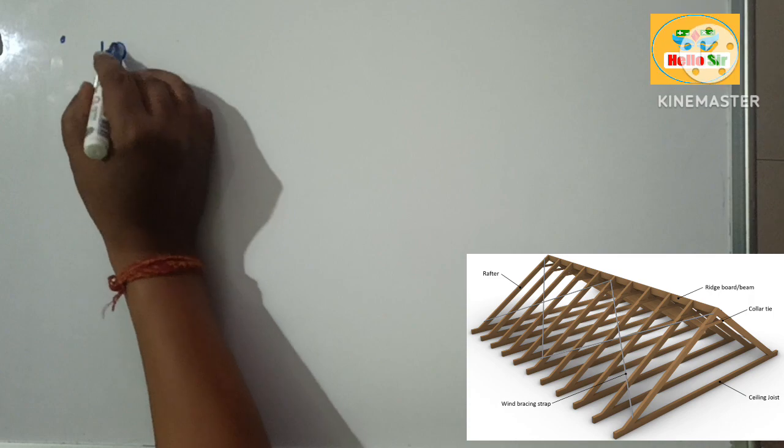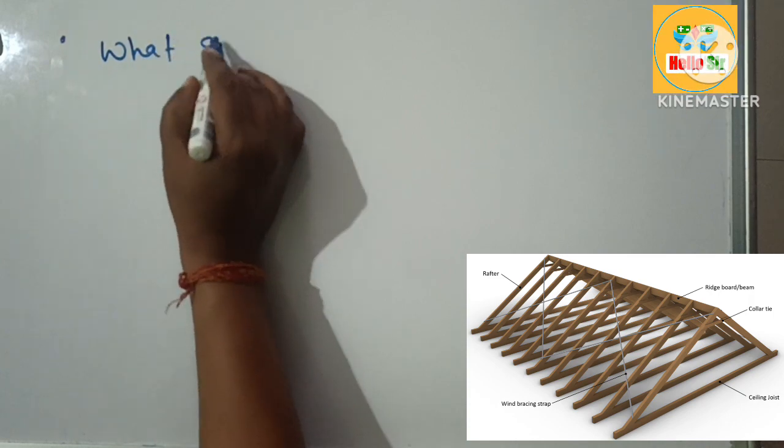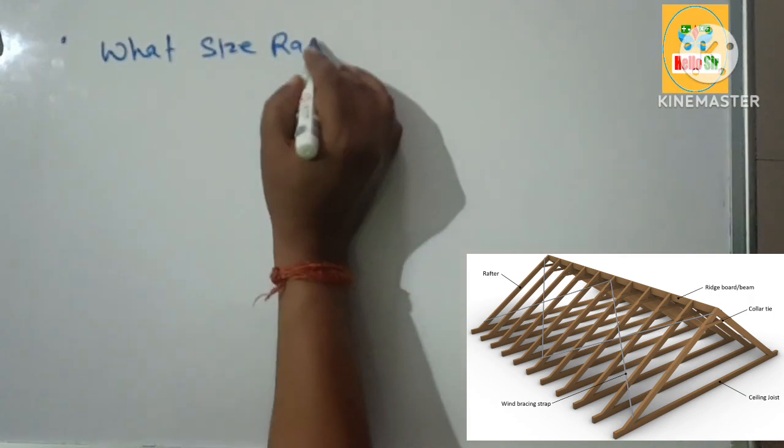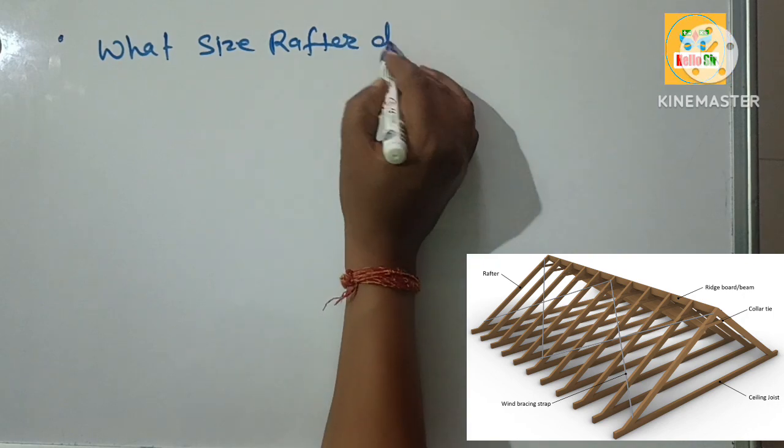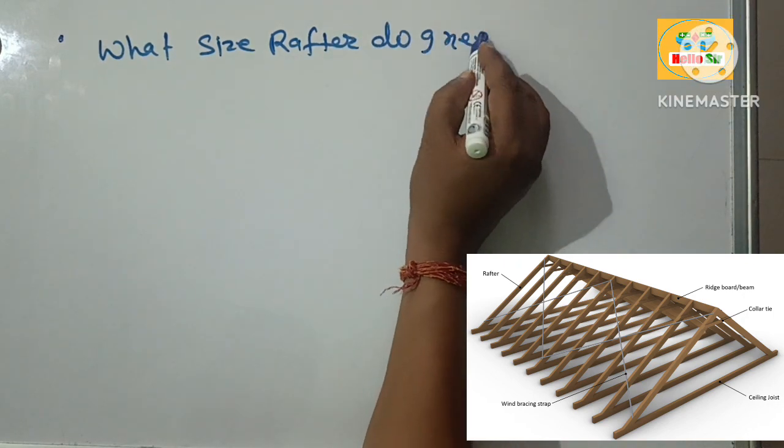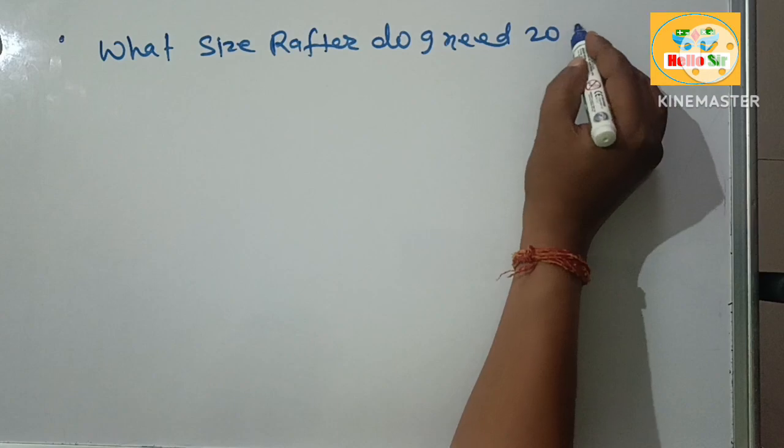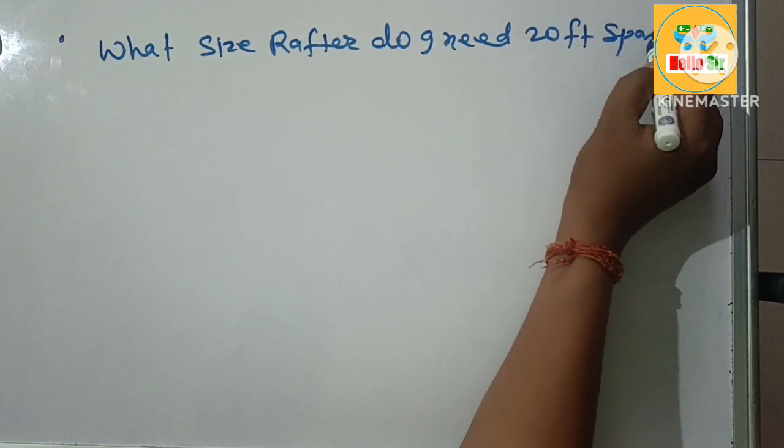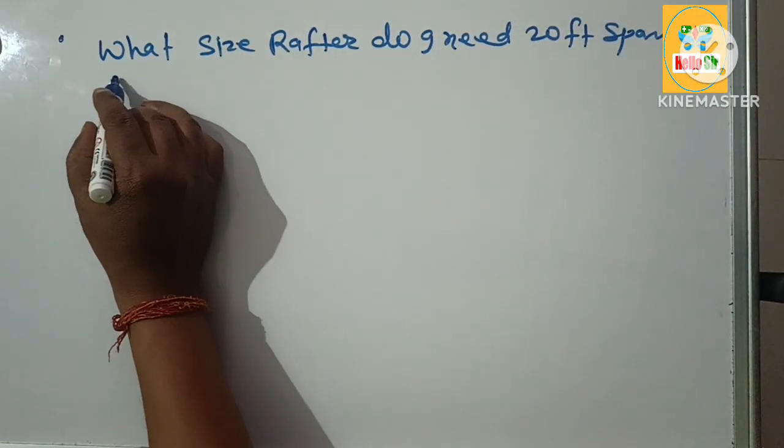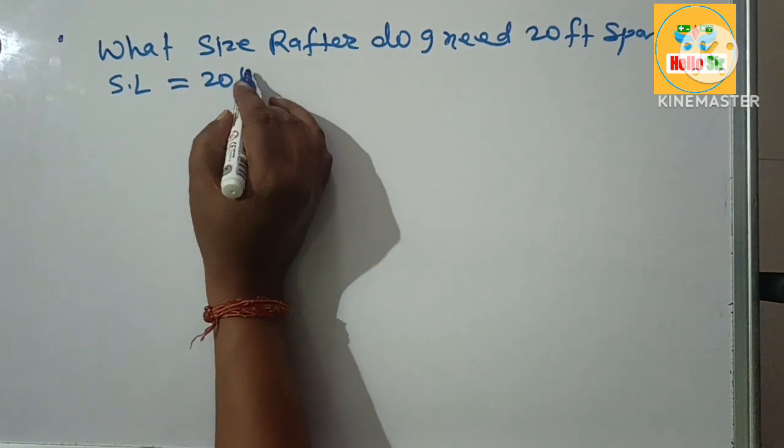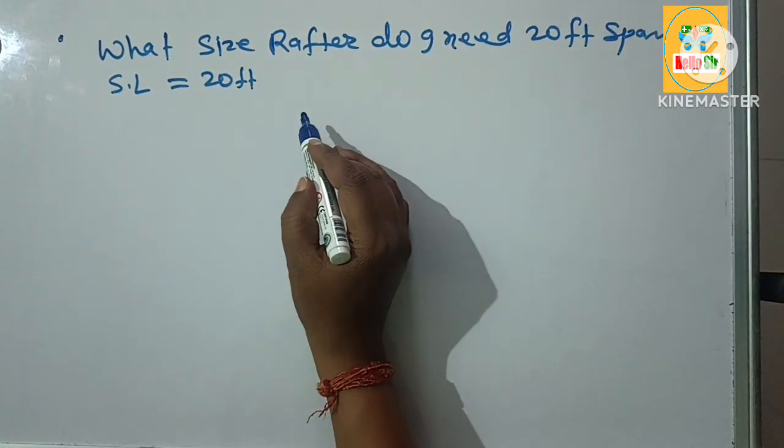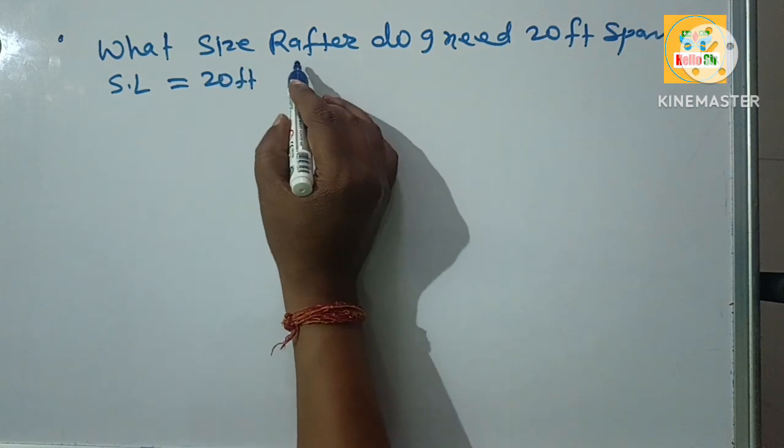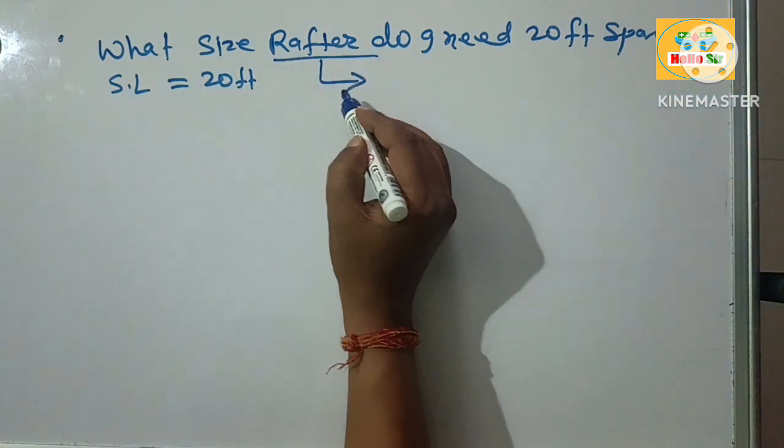In this video we know about what size rafter do I need for 20 foot span. Here you have given the span length is 20 foot and you have to find out the correct rafter size.